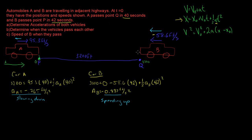For Part B, we need to determine when the vehicles pass each other. A travels some distance from P, and B travels some distance from Q. When they pass, the position of A equals the position of B. So we set up an equation for X_A and an equation for X_B and set them equal to each other.